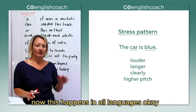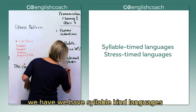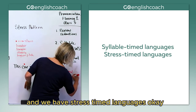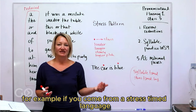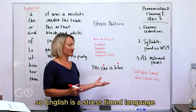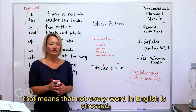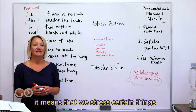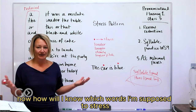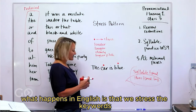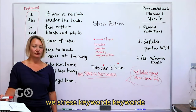This happens in all languages. Generally, we have two categories: syllable-timed languages and stress-timed languages. There are two general kinds, and it will be easier for you if you come from a stress-timed language to learn the stress patterns in English. English is a stress-timed language. That means not every word is stressed — we stress certain things. The question is: how will I know which words I'm supposed to stress? In English, we stress the key words.